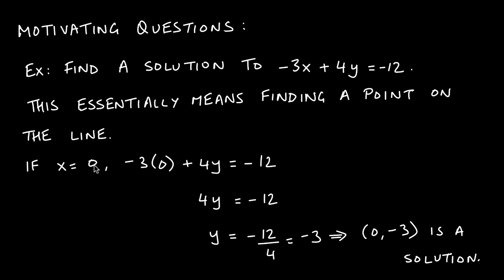We can accomplish this by simply plugging in numbers for x or for y. I'll take the easy way out and say x equals zero — this number doesn't have to be zero, you could have picked any value, even 17.34, but to keep things simple, if x equals zero we can find the corresponding y coordinate by plugging it in: negative 3 times 0 plus 4y equals negative 12.